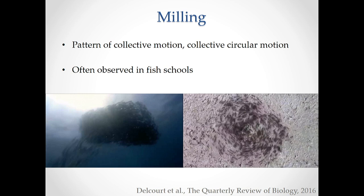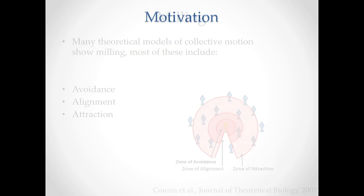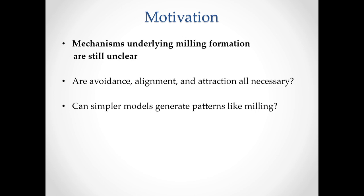Milling is a quite fascinating pattern of collective motion. It's a collective circular motion around the common center which has been often observed in fish schools but also in other animal species like, for example, ants. There are many theoretical models of collective motion which show milling, and most of these include avoidance, alignment, and attraction between individuals. Though the mechanisms underlying milling formation are still unclear — are avoidance, alignment, and attraction all necessary? Can simpler models generate patterns like milling?